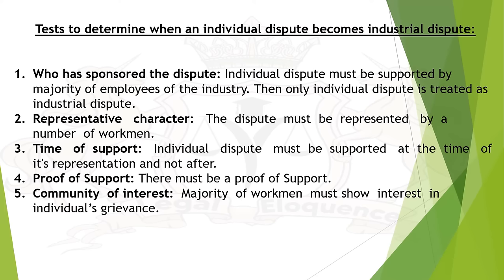Test to determine when an individual dispute becomes an industrial dispute. Who has sponsored the dispute? The individual dispute must be supported by the majority of employees of the industry — it must be supported by the union. Representative character: the dispute must be represented by a number of workmen, there should be a union leader representing them. Time of support: the individual dispute must be supported at the time of its representation and not after. Proof of support — community of interest: the majority of workmen must show interest in the individual grievance; only then will it be treated as an industrial dispute.